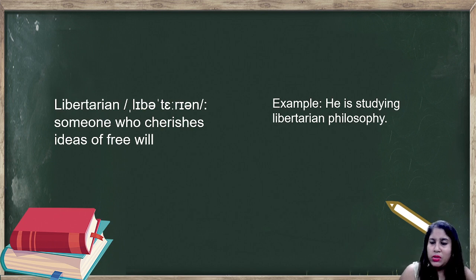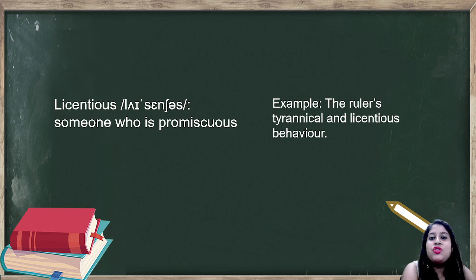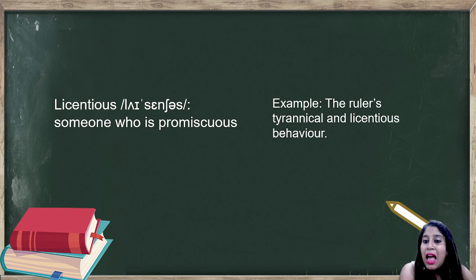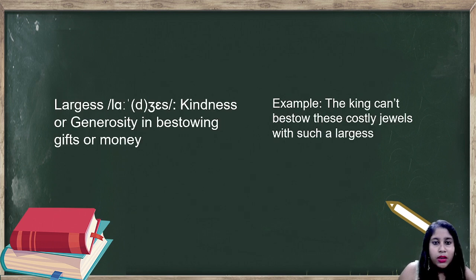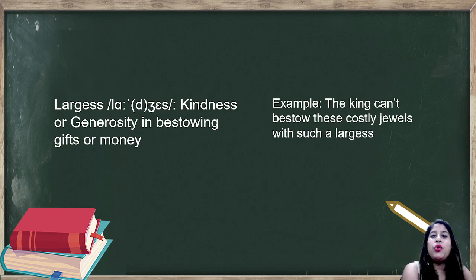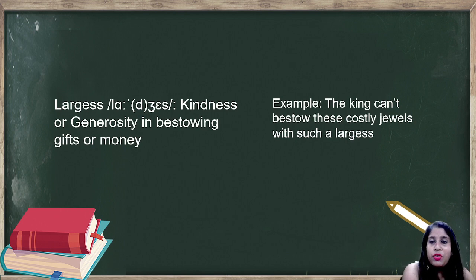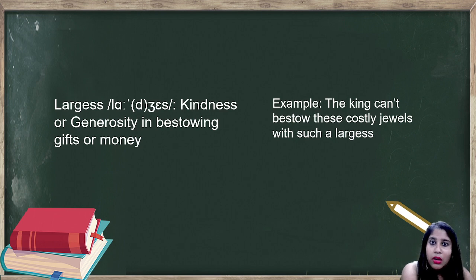The next word is 'licentious,' meaning someone who is promiscuous. Example: the ruler's tyrannical and licentious behavior was very impressive or something like that. Next word is 'largesse.' Largesse means kindness or generosity in bestowing gifts or money — someone who is very giving in nature. Example: the king bestowed costly jewels with such largesse.